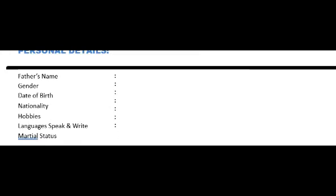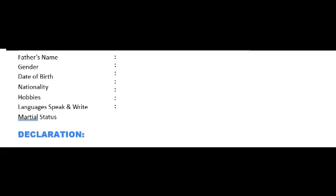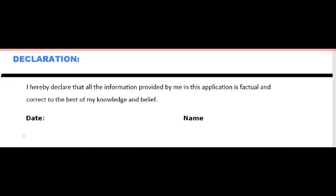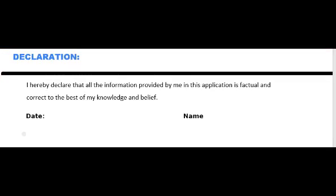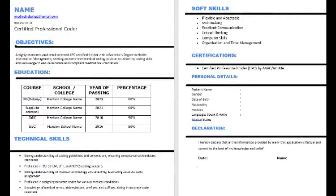The last section is personal details, including father's name, gender, date of birth, nationality, and hobbies. If you want to extend your resume, you can add headlines for hobbies, languages you speak and write, and marital status. Finally, there is the declaration section. This is the overall certified fresher CV.